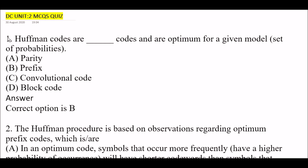Question 1: Huffman codes are blank space codes and are optimum for a given model set of probabilities. Option A: parity. Option B: prefix. Option C: convolutional code. Option D: block code. The right answer is Option B, prefix. Huffman codes are prefix codes and are optimum for a given model set of probabilities.